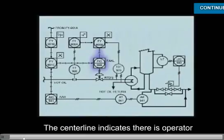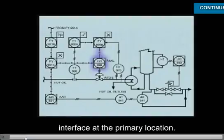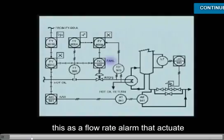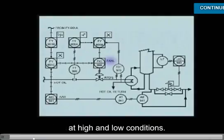The center line indicates there is operator interface at a primary location. The note adjacent to the symbol identifies this as a flow rate alarm that actuates at high and low conditions.